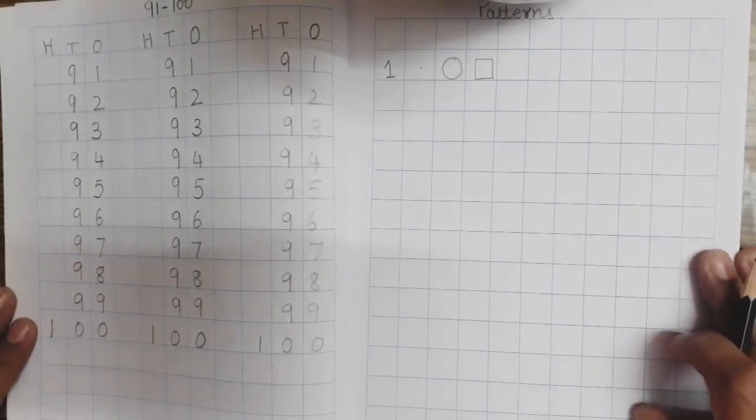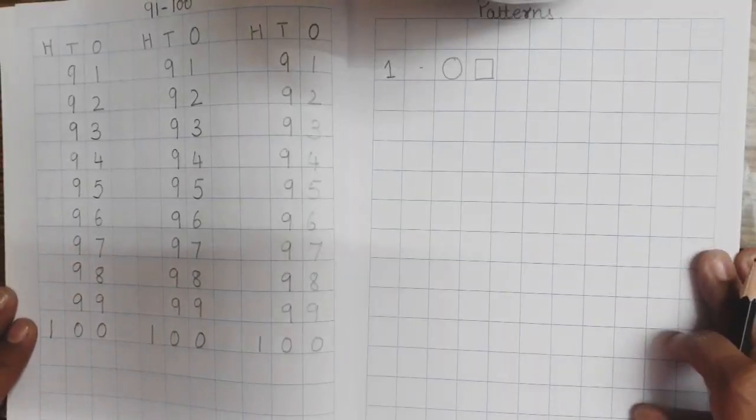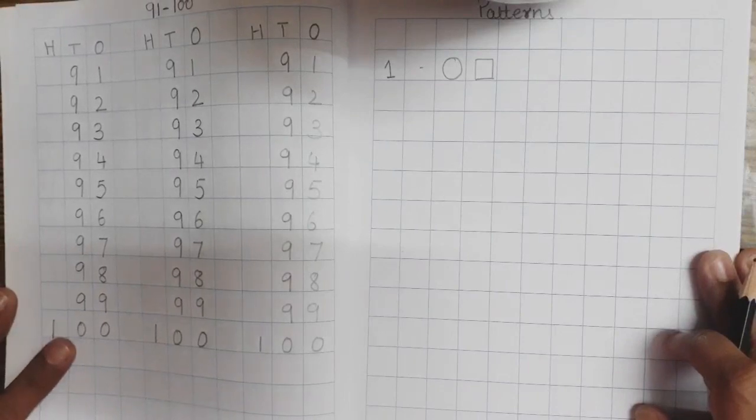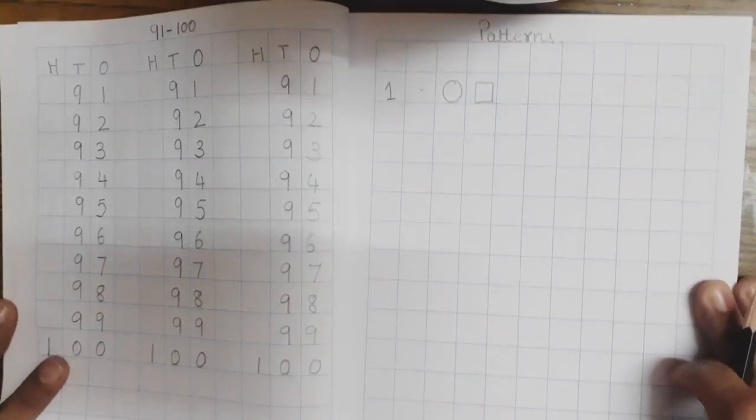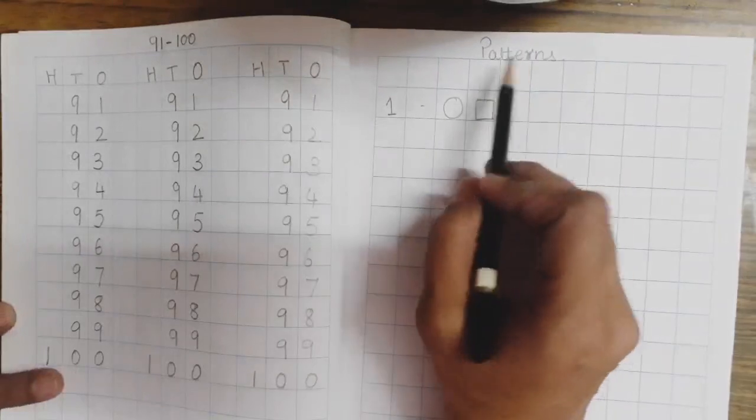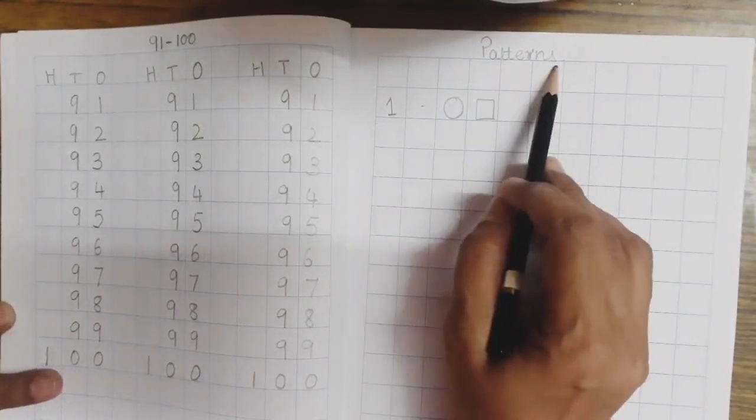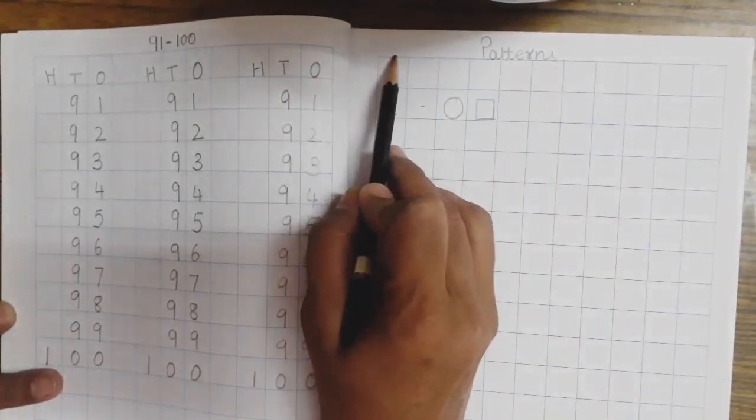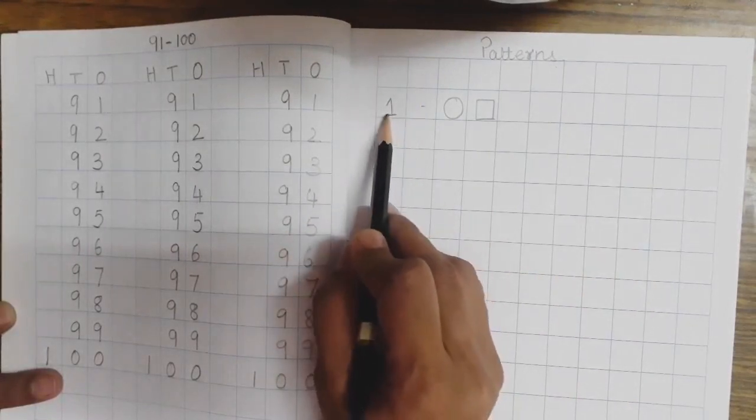Children, now let's draw pattern in our pencil time mathematics. Here first of all you are going to write the spelling of pattern, write patterns and today's date. Now, I am going to start first pattern.